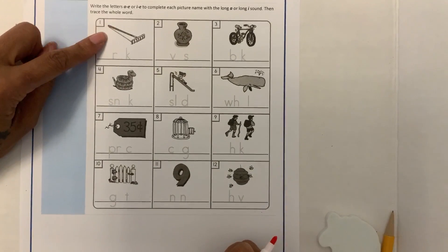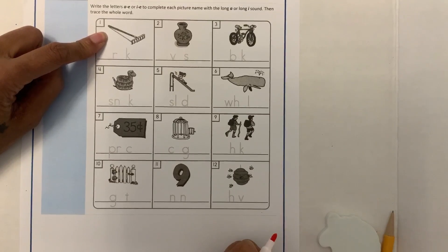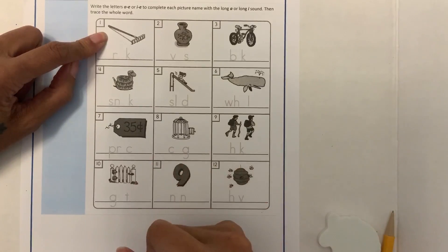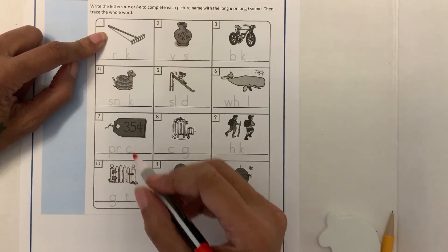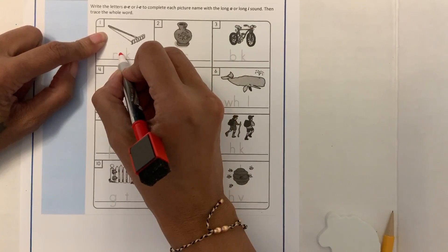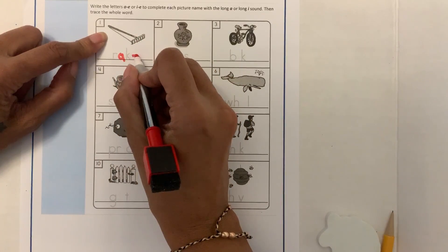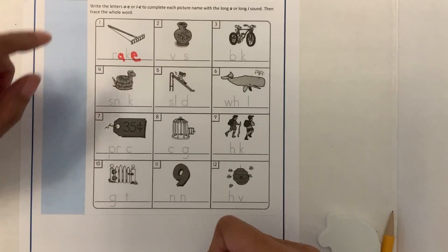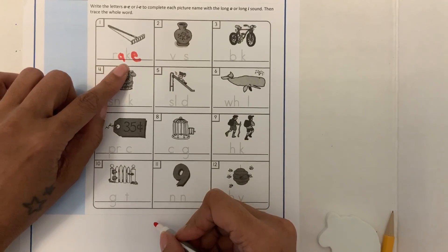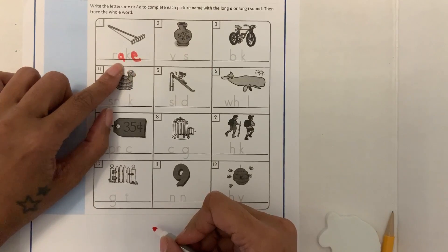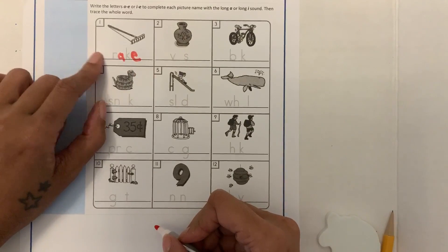So the first picture is a picture of a rake. What sounds do we hear? Rake. We hear an A. So we're going to put an A here and remember we have the silent E. So let's say it. Rake, rake. The E is making it. It's not A, it's rake.